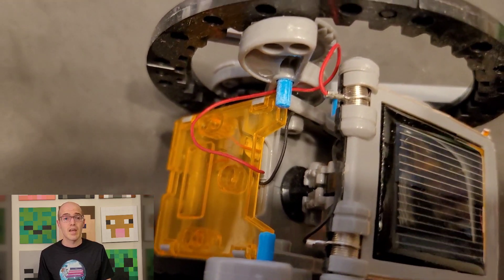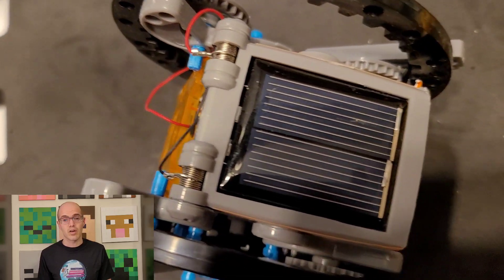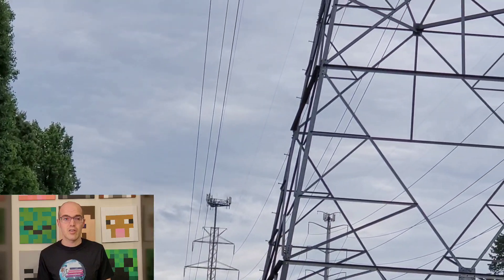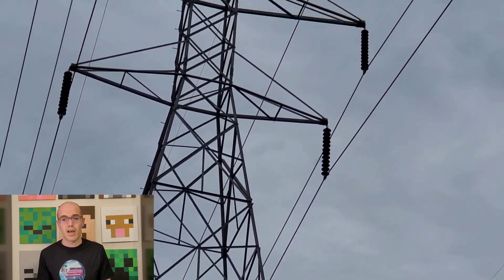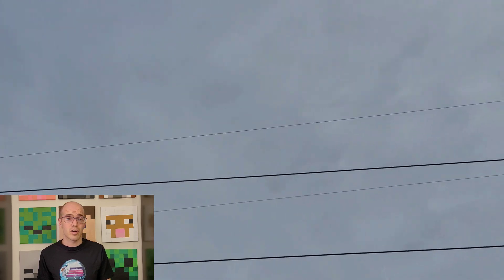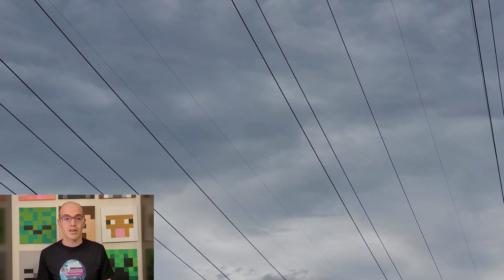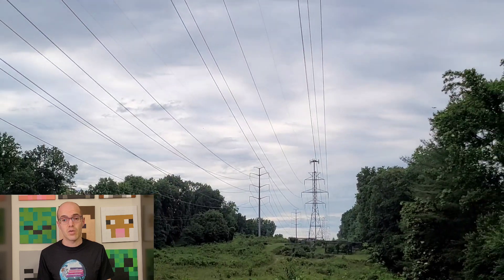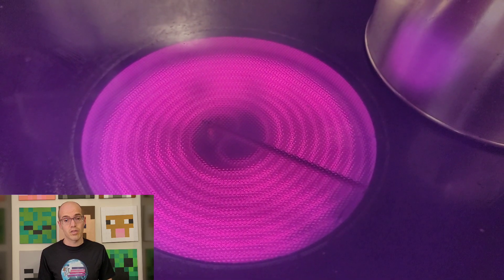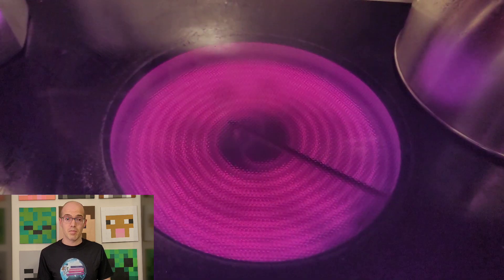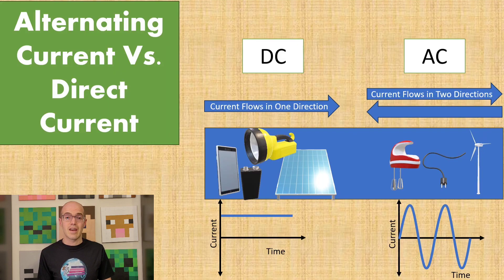In alternating current (AC), electrons oscillate back and forth, periodically changing direction in response to the alternating voltage supplied by the power source. This oscillation occurs at a specific frequency, typically 50 or 60 Hz depending on the region. Unlike DC where electrons flow continuously in one direction, in AC the direction of electron flow reverses at regular intervals. This alternating flow of electrons enables the transmission of electrical energy over long distances and allows for the operation of various electrical devices and appliances that rely on changing electric fields, like lights, appliances, and heating systems.